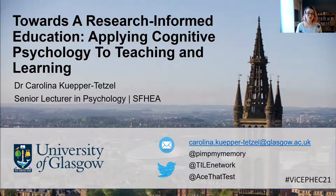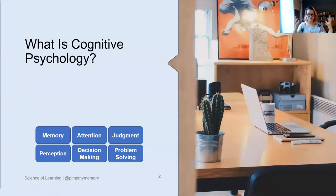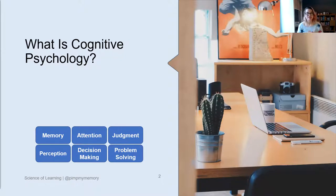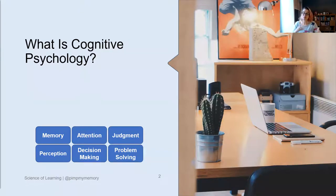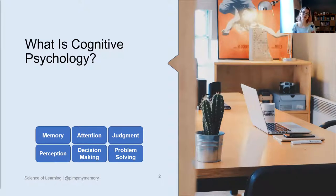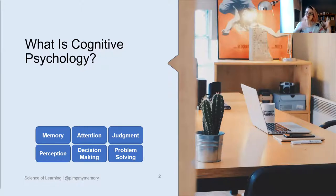Let's unpack first those big words. What is cognitive psychology to begin with? What are we dealing with when we talk about cognitive psychology? It is an area in psychology that for many years has looked into how we remember information, how or when we forget information, how we make judgments or decisions. It also looks at how we solve problems and all these different fundamental human abilities, skills, and cognitive processes. For the longest time, cognitive psychology was doing this in its own world, doing fundamental research, lab research, and accumulating all those findings.